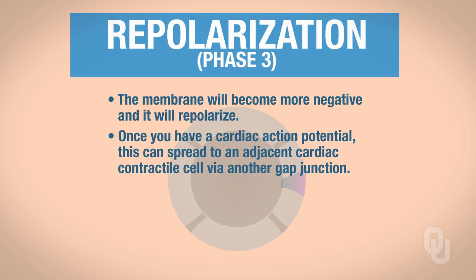Keep in mind that once you have a cardiac action potential, it can spread to an adjacent cardiac contractile cell via another gap junction.